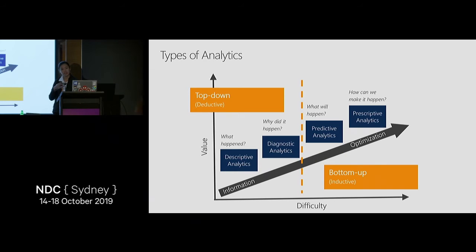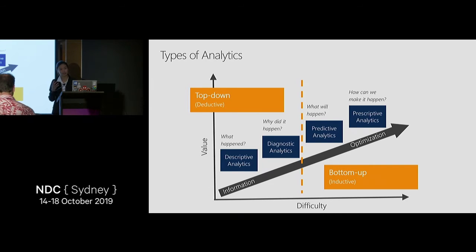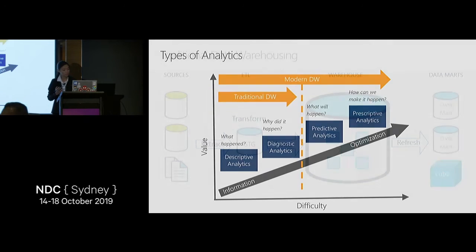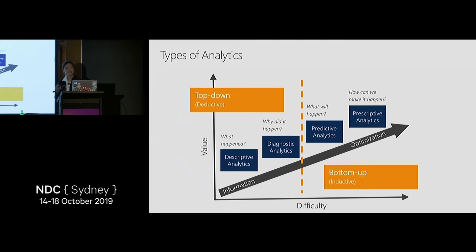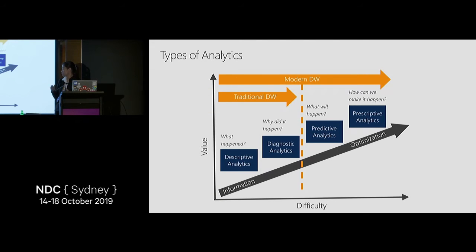The first two analytics have a top-down approach — you start with your fact and dimension tables and the reports you want to create, then populate them with data. The second two have a bottom-up approach: you don't necessarily know which datasets will be useful for machine learning models; your data scientist has to do exploratory analysis first. The traditional data warehouse gets you as far as the first two analytics, but to cover all four, you need the modern data warehouse pattern.